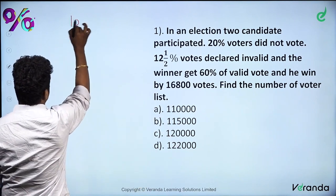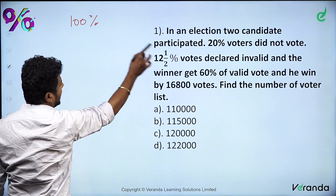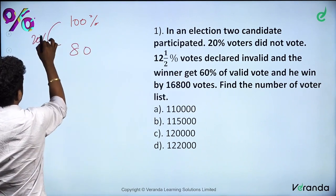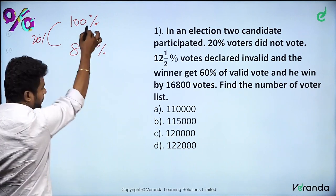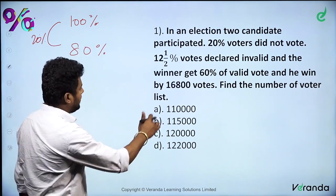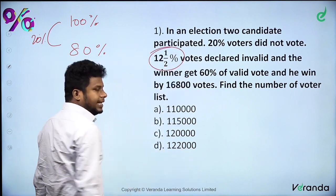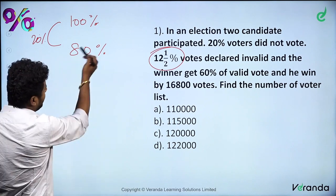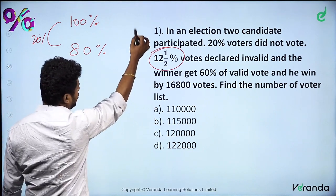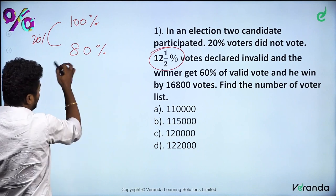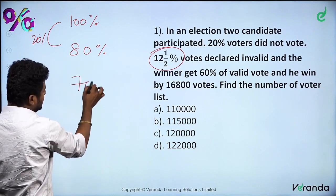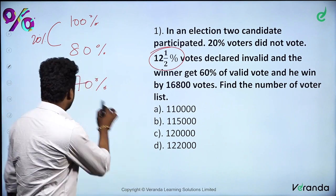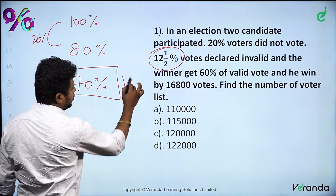Let's take 100% of people. 20% did not vote, so 80% voted. Of those, 12.5% — that is 1 by 8 — are invalid, leaving 10% invalid. So it's 70% valid votes.